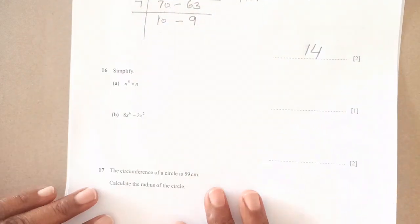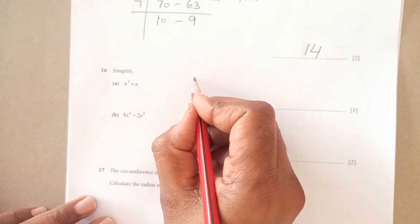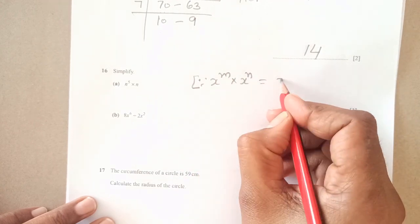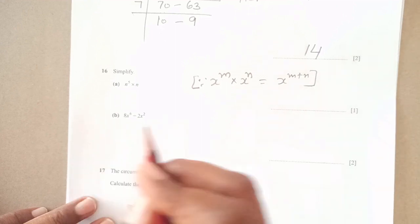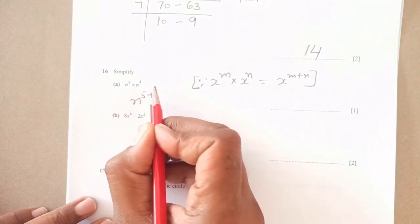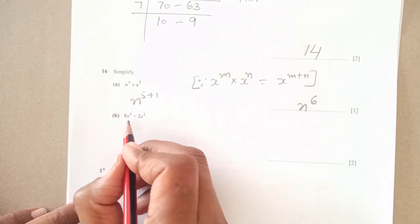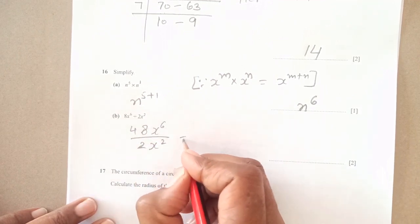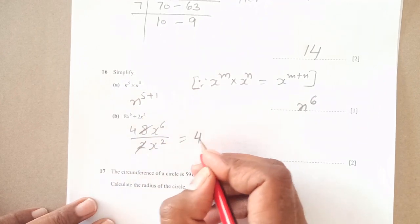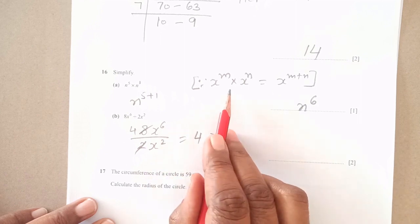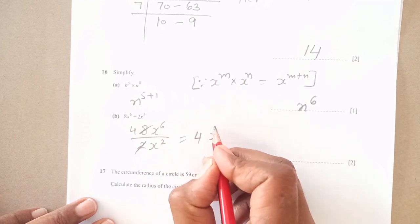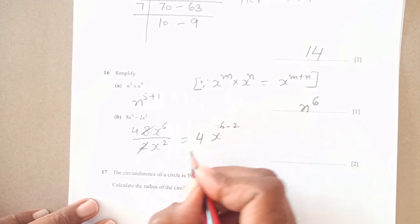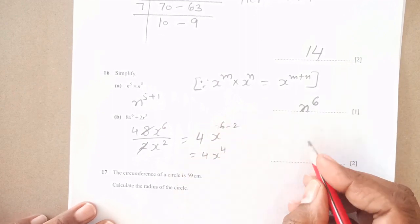Number 16: simplify n to power 5 times n. By the rules of exponents, x to power m times x to power n, we add the powers. This is n to the 5 plus 1, so n to power 6. Part b: 8x to the 6 divided by 2x squared. This simplifies to 4, then for x, when there's a division sign, we subtract the powers: 6 minus 2. So 4x to power 4 is the final answer.